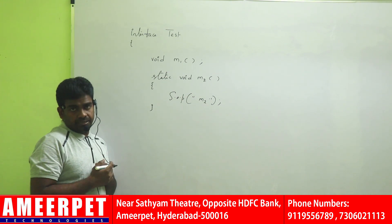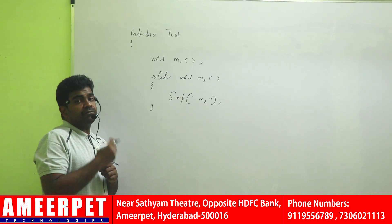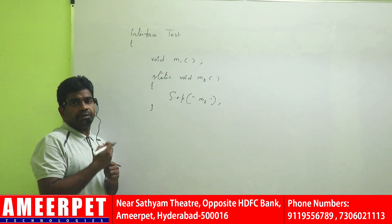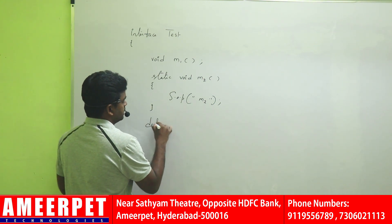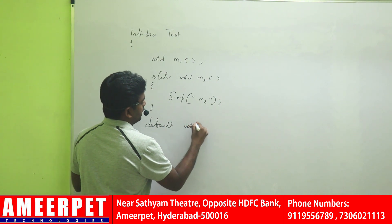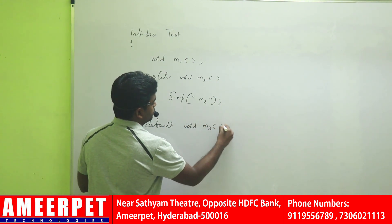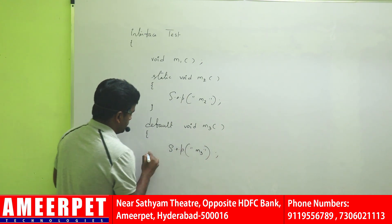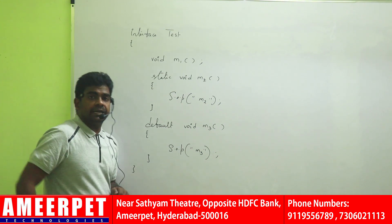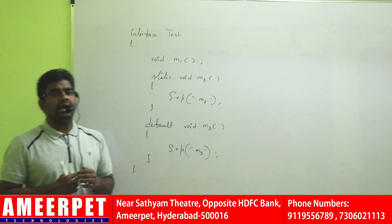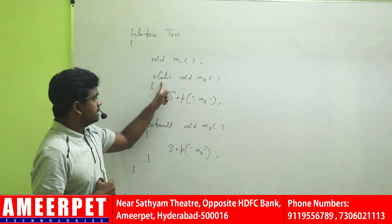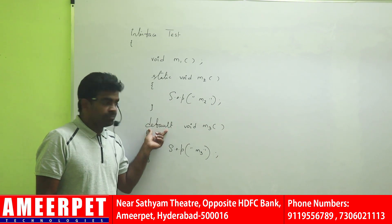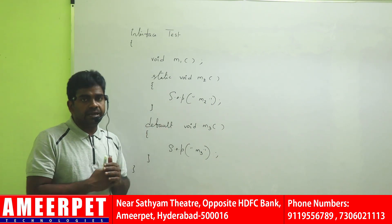Since JDK 8, they added one more feature: we can define default methods also inside the interface. Default methods are defined with the default keyword. For example, default void M3, with a body — just printing M3. This is how we define an interface since JDK 8. In JDK 7 they added static methods; since JDK 8, we can also add default methods inside the interface.